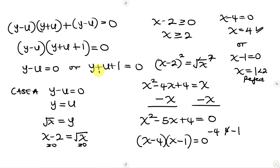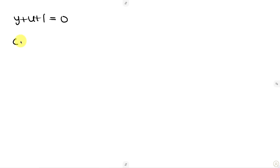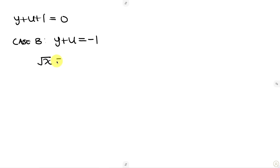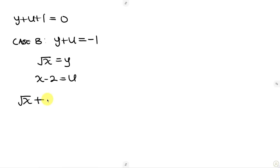Now for Case B: y + u + 1 = 0, so y + u = -1. Substituting back — y is √x and u is x - 2 — we get √x + (x - 2) = -1. Isolating the square root: √x = -1 + 2 - x = 1 - x.